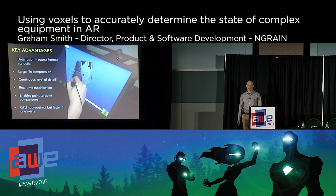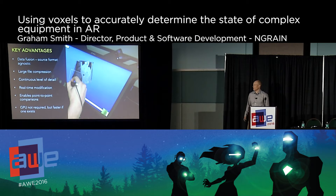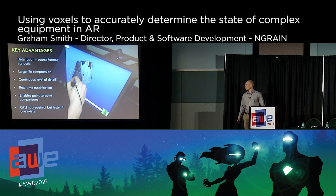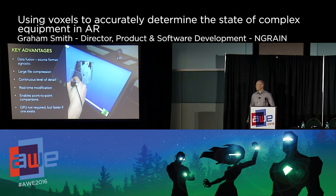Large file compression is something we talk about a lot as well. If you're talking about huge gigabyte-sized point cloud files, you can convert those down to small numbers of megabytes — 50 to 100 megabytes from gigabyte point cloud files. Something like a jet, and we do a lot of aerospace work, might be 20 or 40 megabytes in size, so you can deploy that on a mobile platform even for something that large. Continuous level of detail allows you, as you zoom into something, to have better and better quality, and as you zoom out you need to show less information — again good on mobile platforms.